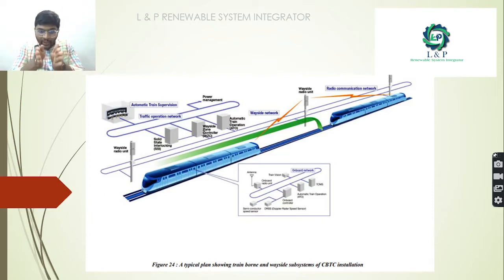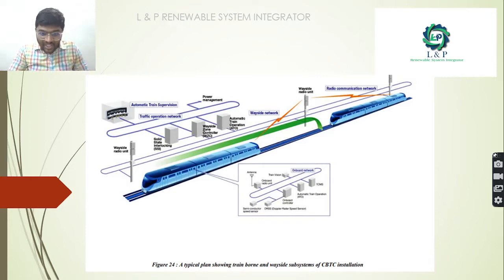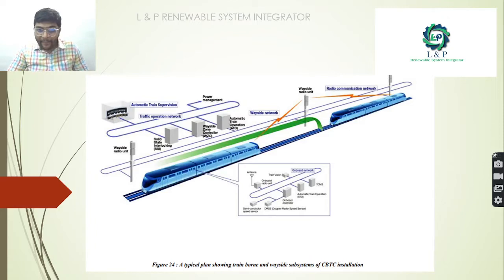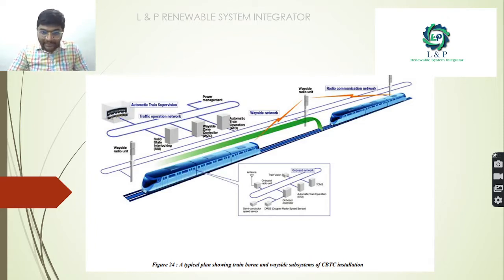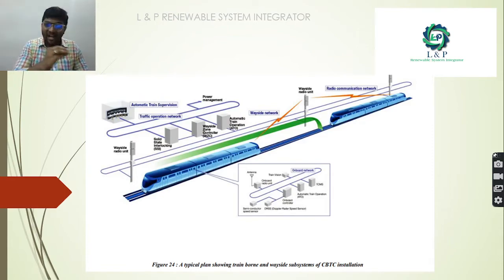On the wayside aspect we also have automatic train operation ATOs. Inside the train there is an on-board network with an antenna, an on-board radio unit, ATO, ATP, and many semi-conducting sensors.